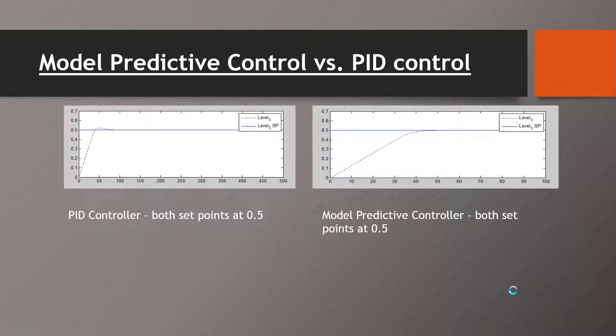Initially, we set our set points at 0.5 for both tanks and both the PID controller and model predictive controller arrived quickly at our set point and converged very well.